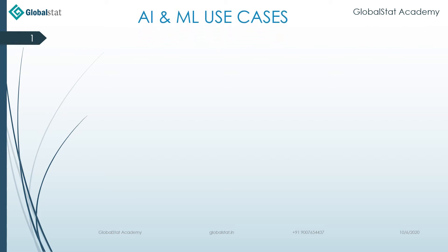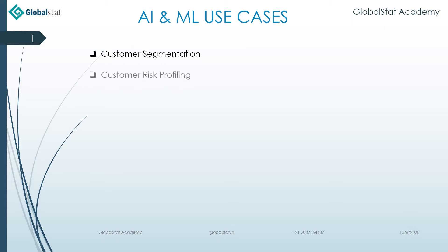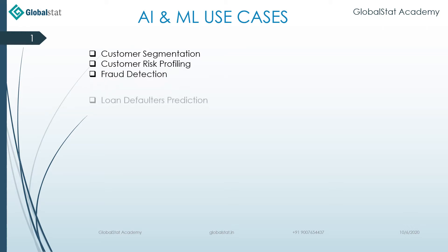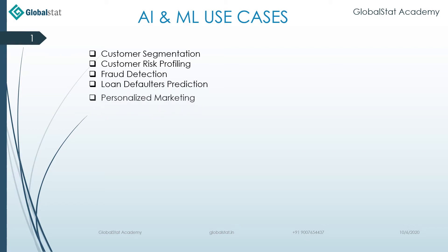We are going to talk about artificial intelligence and machine learning use cases — where exactly we can use machine learning techniques. We can use them to do customer segmentation, customer risk profiling, fraud detection, and loan defaulters prediction.